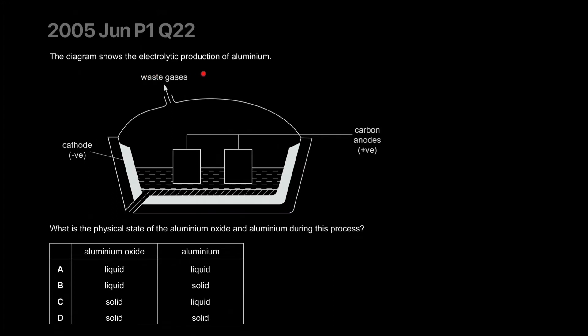The diagram shows the electrolysis of aluminum, right? What is the physical state of aluminum oxide and aluminum during the process? They're both liquid because it's molten, right? So going to go with liquid, liquid. The answer is A.